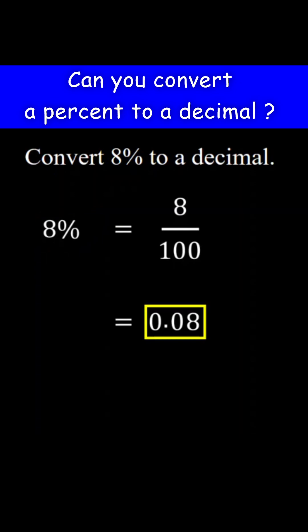So basically, to convert a percent to a decimal, just move the decimal point two places to the left and remove the percent sign.